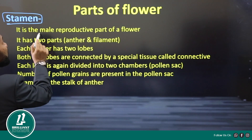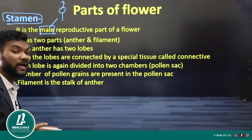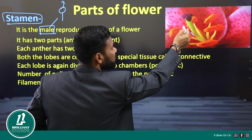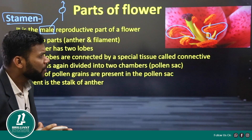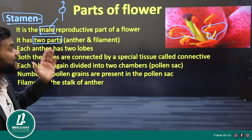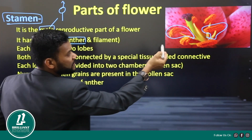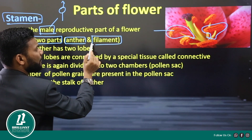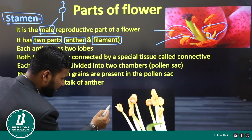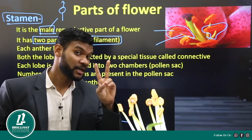Stamen is the male reproductive part of a flower and one of the essential parts. Looking at the structure of a stamen, each stamen has two different parts: one is called the anther, and the second one is the filament. The anther is the upper part and the filament is the structure below it.